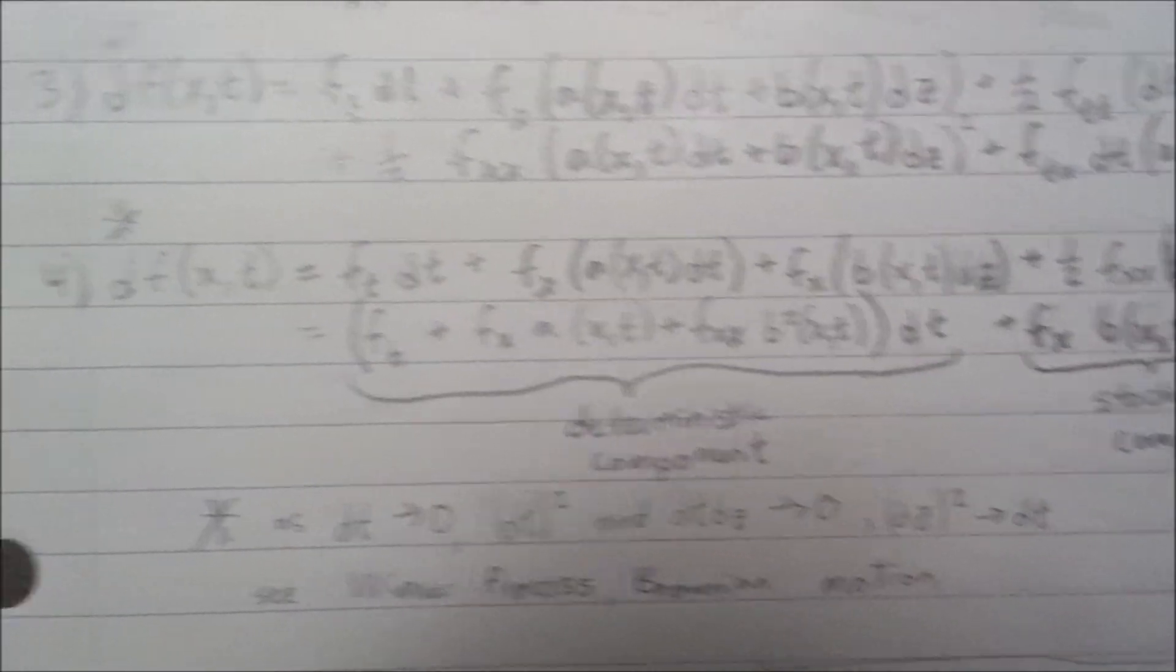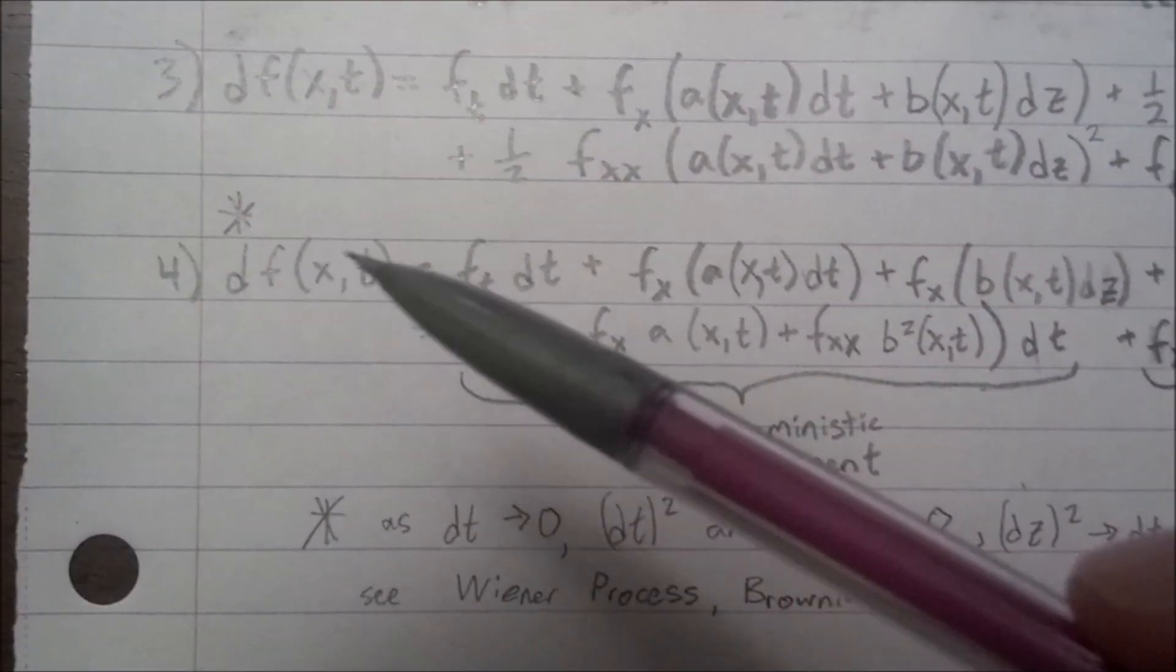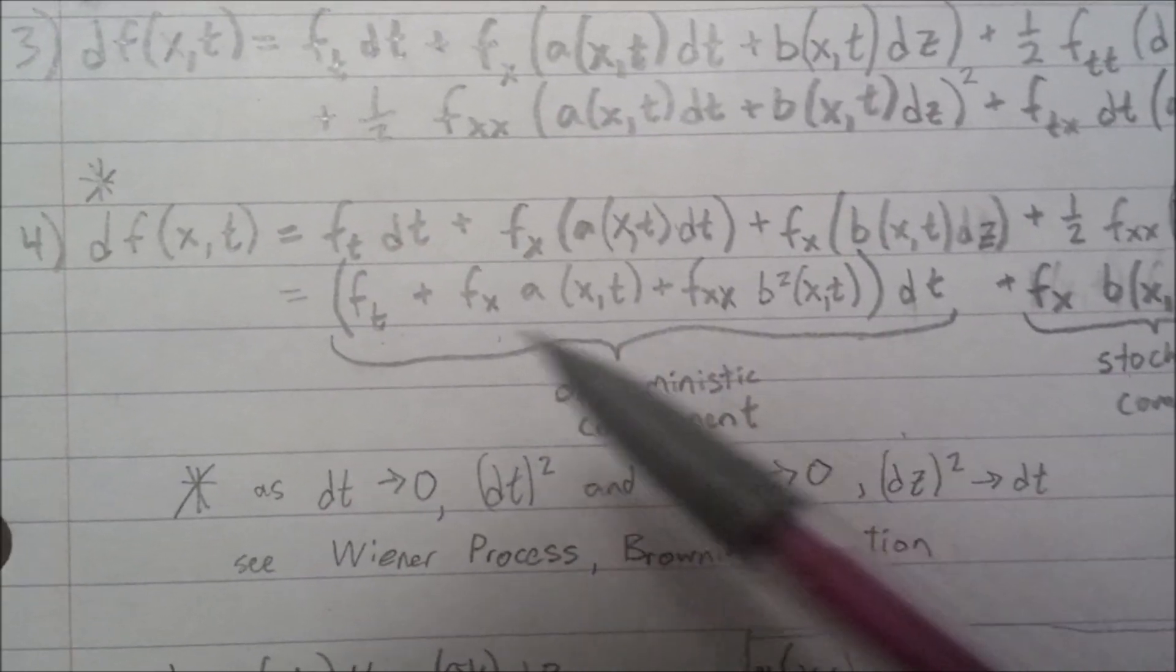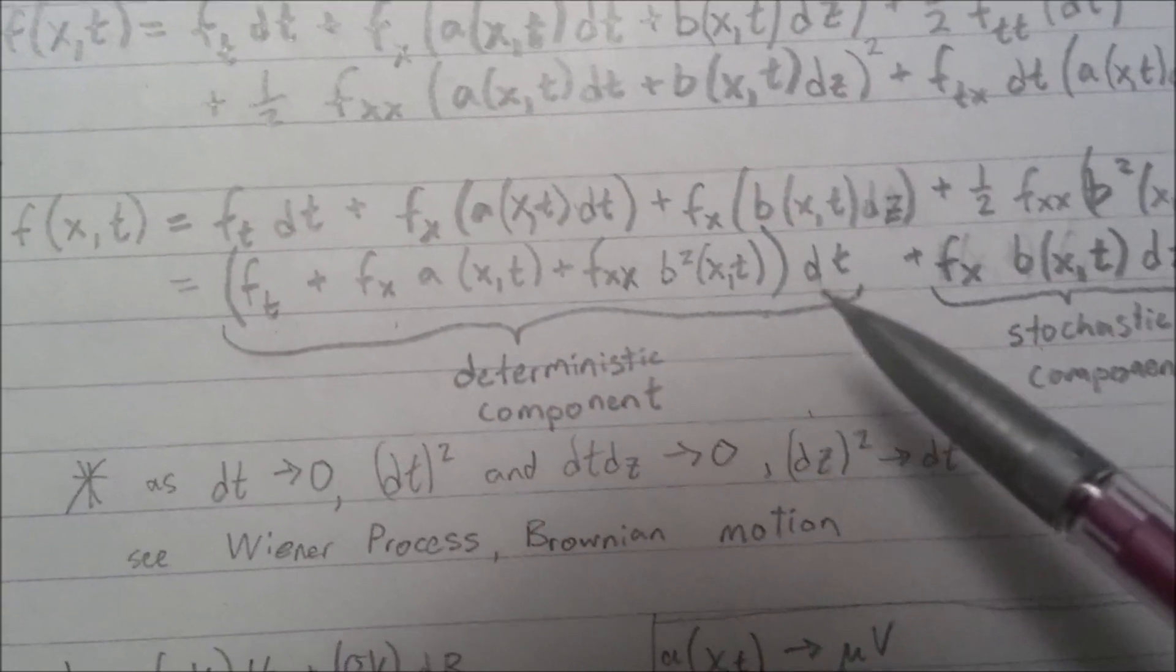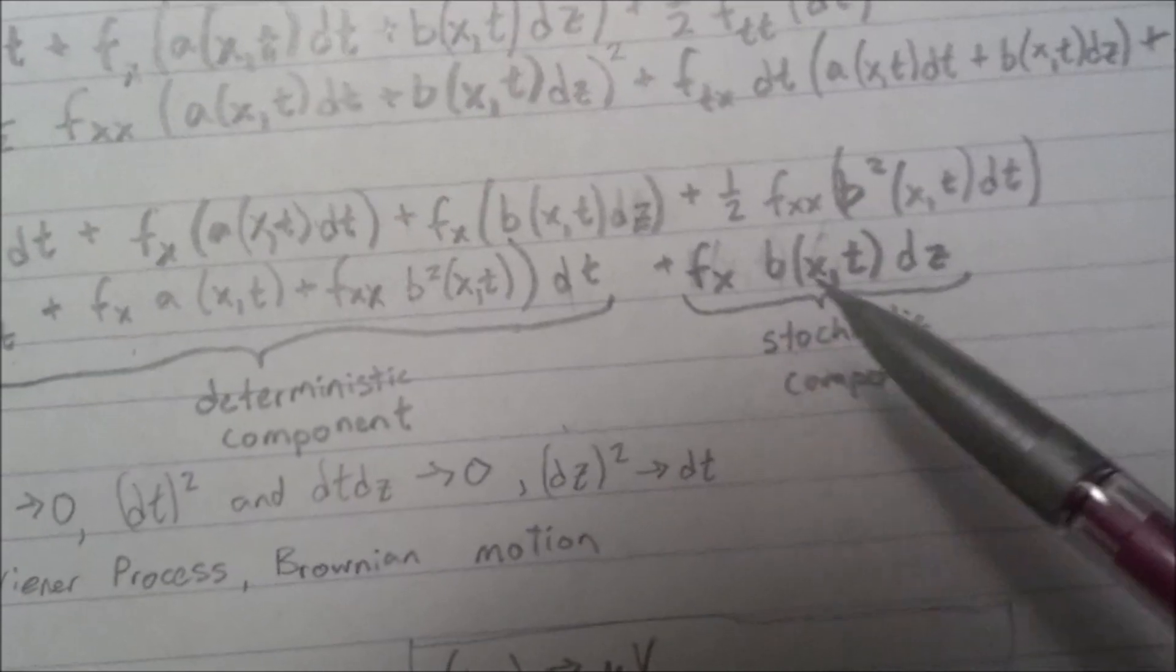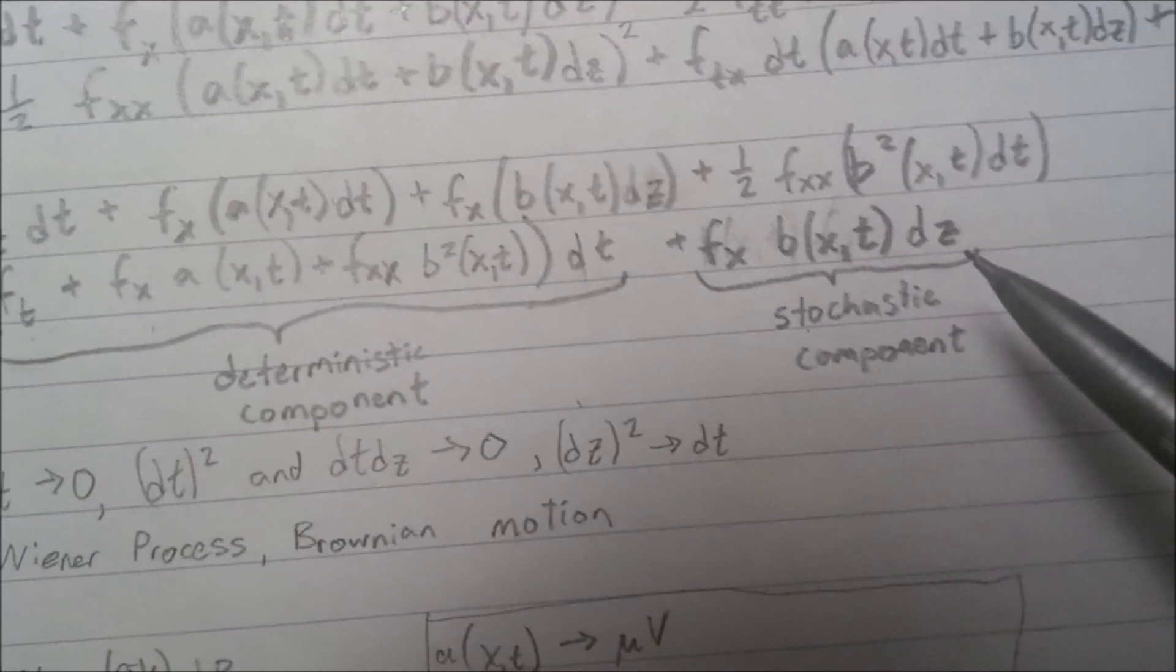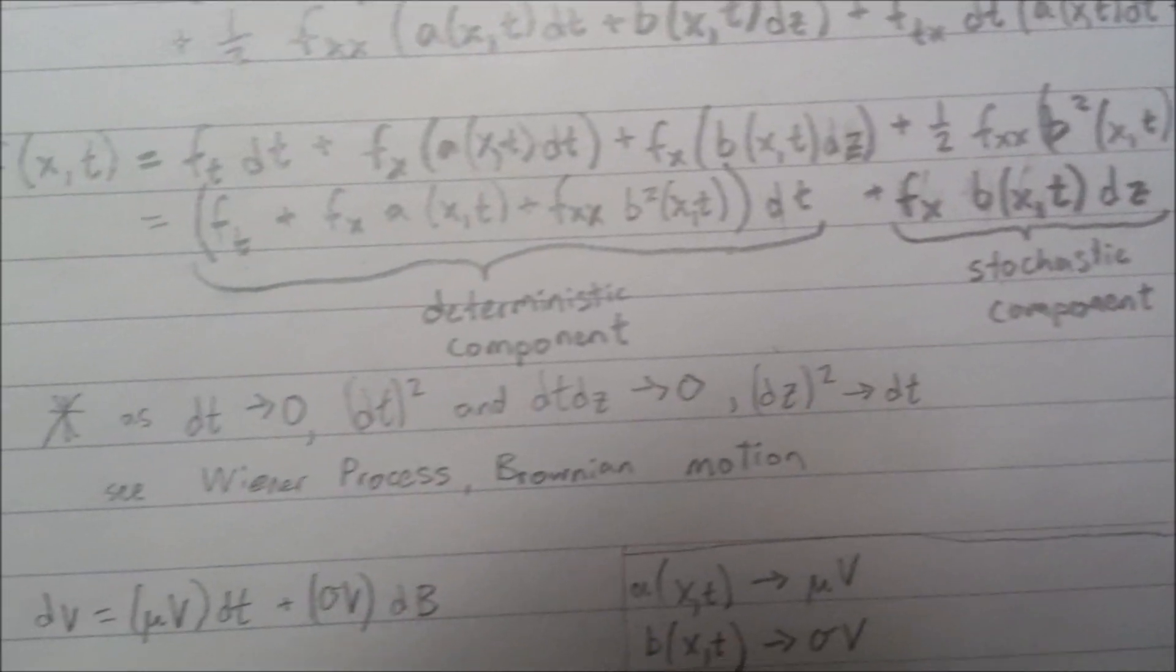And as you can see, the differential of f, which is a function of x and t, now has a deterministic component, which is dependent on time, and it has a stochastic component, which is dependent upon randomness, where the z represents randomness.